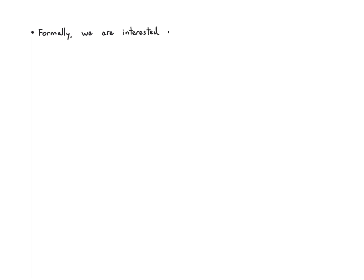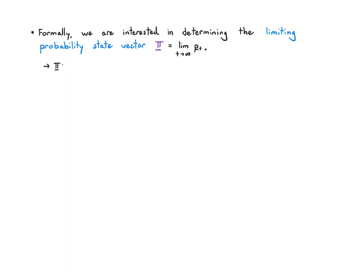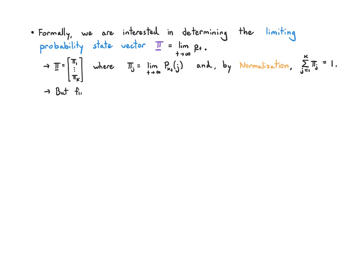Formally, what I want to determine is the limiting probability state vector. We've been thinking about the probability state vector at time t, and now we're looking at its limit as t goes to infinity, which we call π. This π is a vector of all the individual probabilities taken to their limit, and by normalization it must sum to 1. But before talking about limits, we have to check that the limit actually exists.